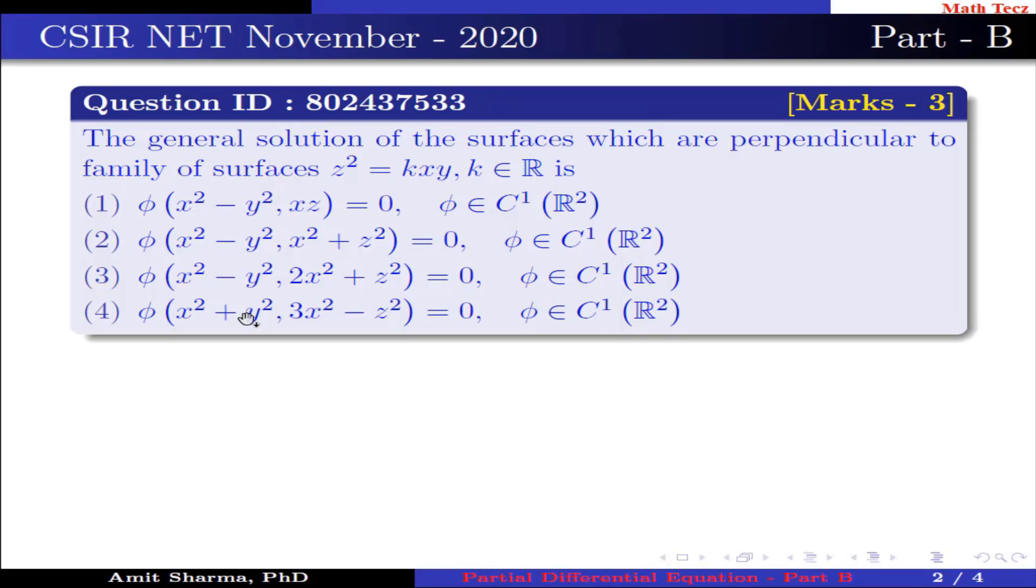Option 4: φ(x² + y², 3x² - z²) = 0, φ ∈ C¹(R²).